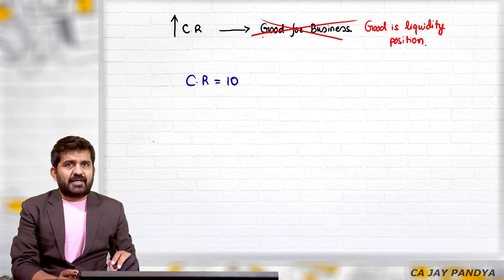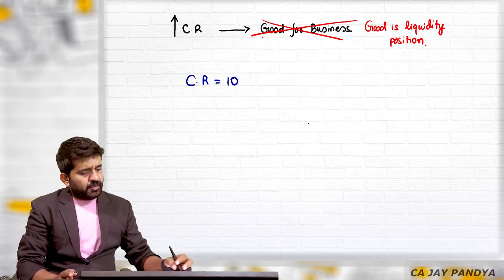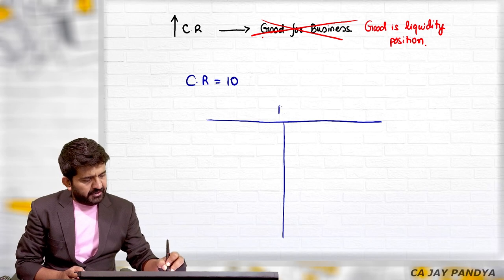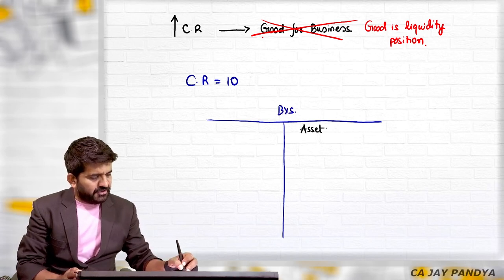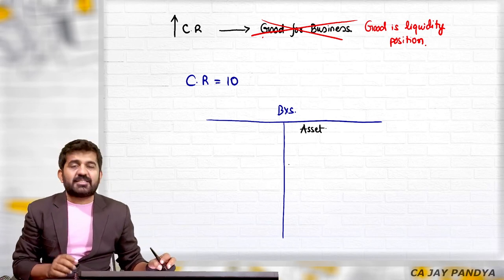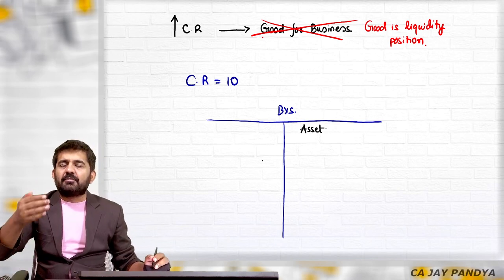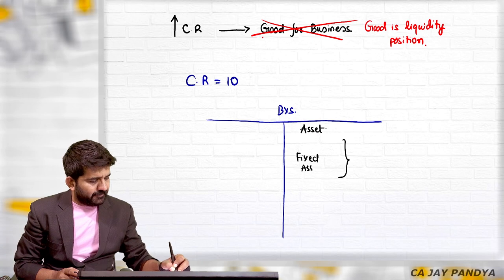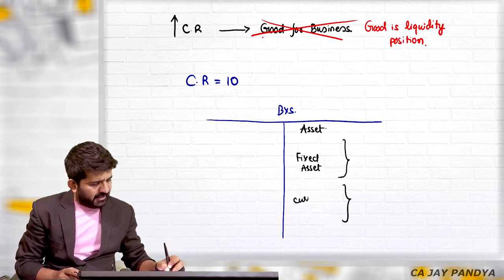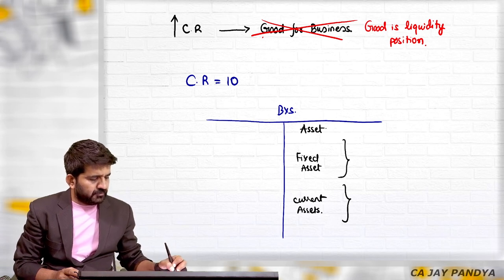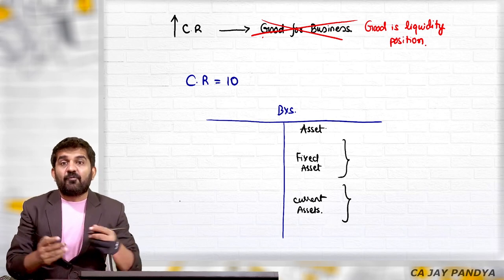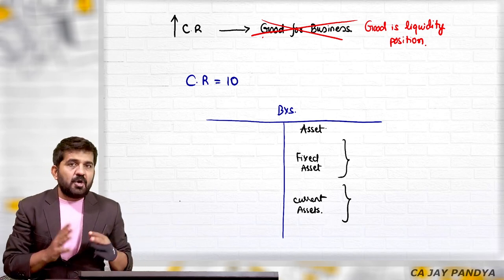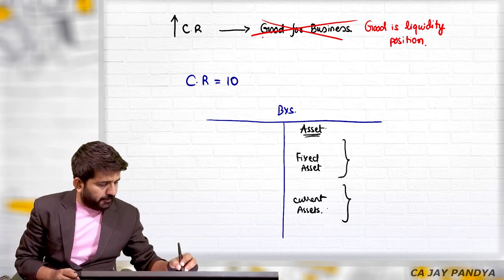Let me make it absolutely clear. Try to understand the asset side of the balance sheet. You might have heard in 11th and 12th standard that goodwill should be written on top, then fixed assets, then investments, then current assets. So on the upper part we normally keep fixed assets, and on the lower part we normally keep current assets. You might not have questioned why we cannot write cash first and machinery last. Why is it the custom to write fixed assets on the upper side and current assets on the lower side?